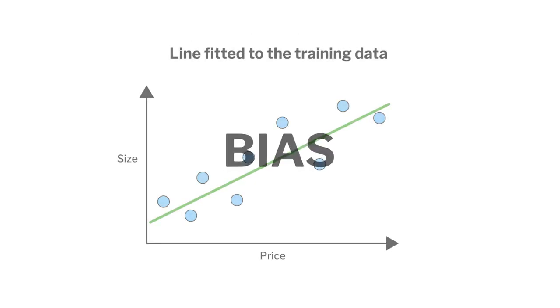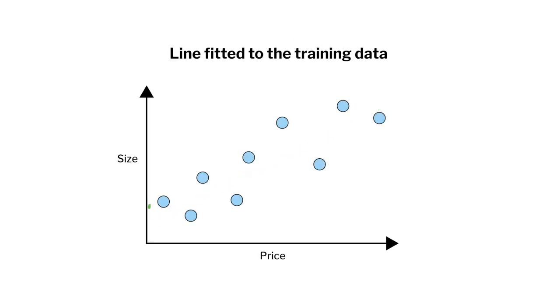Instead, you could use a line that fits the data perfectly. Here, there is no bias, as the line is flexible enough to accurately reflect all of the data.